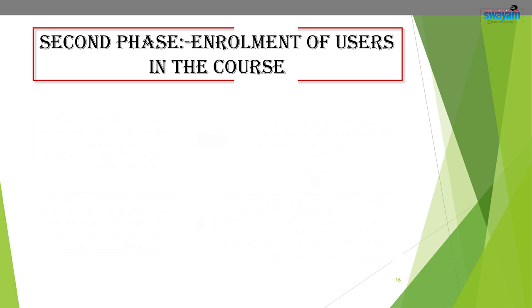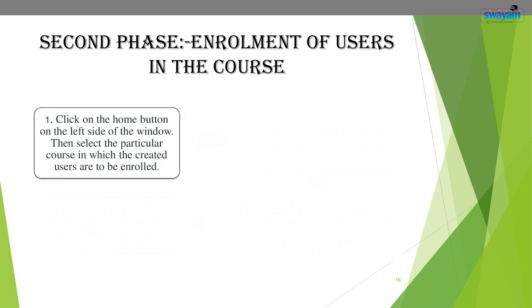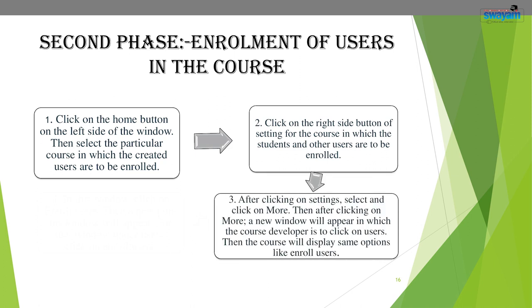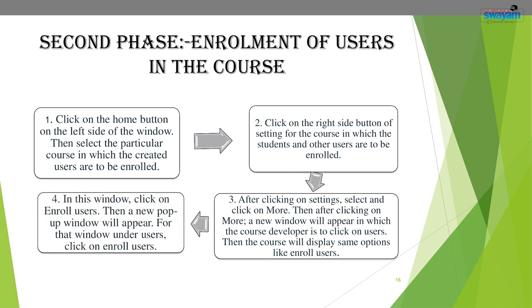To enroll users, first click on the Home button on the left side. Then click on the particular course in which the created users are to be enrolled. Click on the settings for that course, then select and click on 'More'. After clicking on More, a new window will appear — click on Users. The course will display options including 'Enroll Users'. Click on 'Enroll Users'.